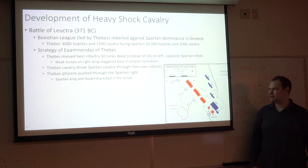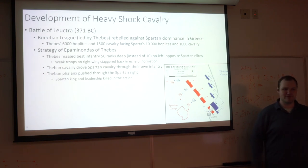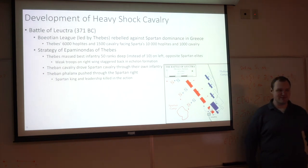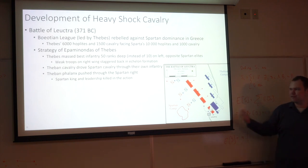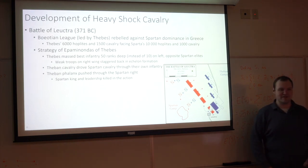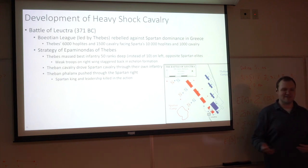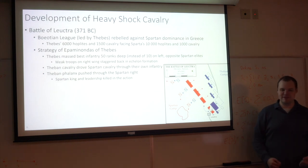This was pretty much nothing but brilliant from the point of view of Epaminondas, but it was also the first time that you really see a cavalry unit being instrumental in winning a battle in Greek history — or in fact in any history. Because while the Persians did have some cavalry, it was mostly used for flanking attacks, and the majority of the battle was still won by infantry.